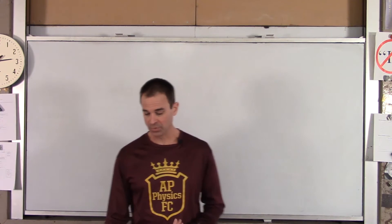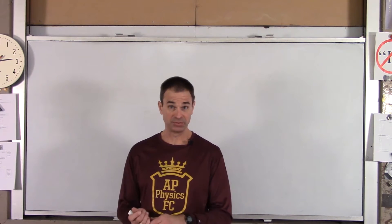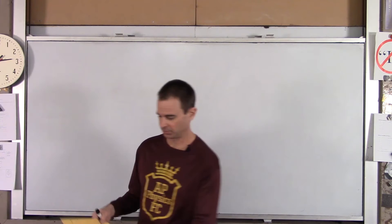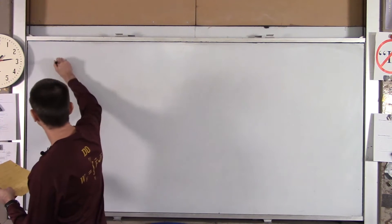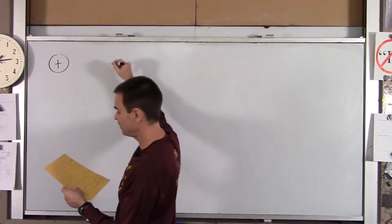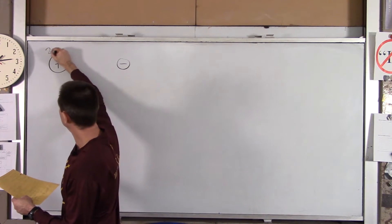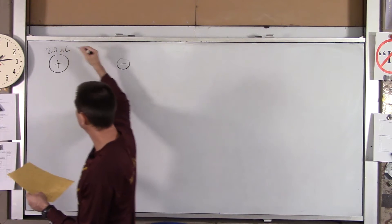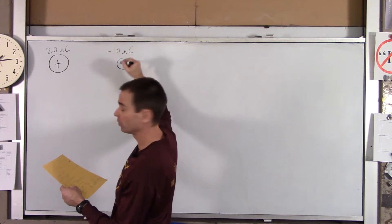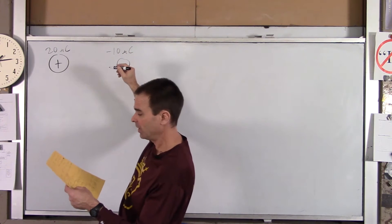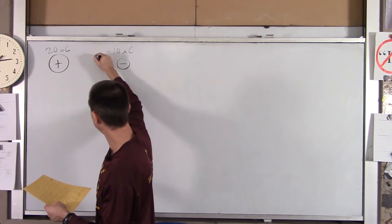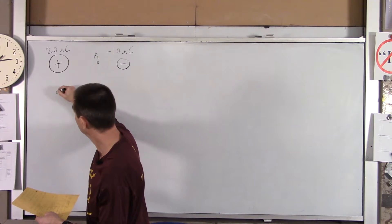Let me start with the setup of the situation. Let's say you've got two fixed point charges. One of them is positive and one of them is negative. We're going to move a third charge from point A to point B.